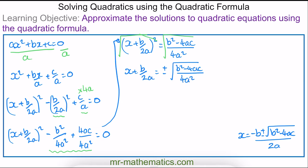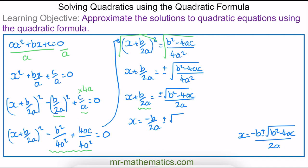Now I can simplify by taking the square root of the numerator and denominator separately, giving ±√(b² − 4ac) / 2a. Then moving the b/2a fraction to the other side, we have x = −b/2a ± √(b² − 4ac) / 2a.